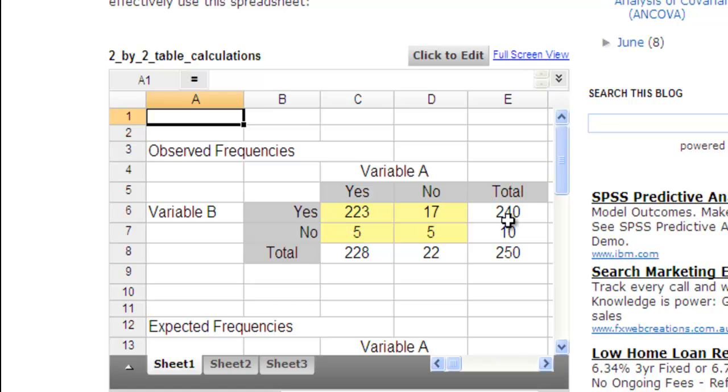It not only calculates the Pearson Chi-Square value, it does all the intermediate calculations, and it also does a little write-up of the results at the end. So how to use this? The first step is to click on Edit. And this will activate the sheet.